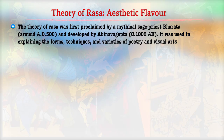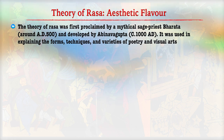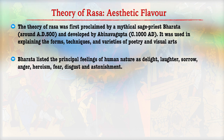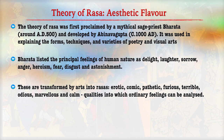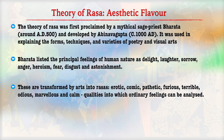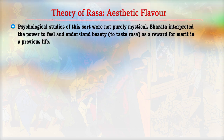The theory of rasa was first proclaimed by the mystic saint-priest Bharata and was later developed by Abhinav Gupta. It was used in explaining the forms, techniques and variety of poetry and visual arts. Bharata listed the principal feelings of human nature as delight, laughter, sorrow, anger, heroism, fear, disgust and astonishment. These were transformed through paintings into various rasas such as comic, furious, terrible, marvellous and calm qualities, which can be analyzed through the various paintings. Bharata interpreted the power to feel and understand the rasas as a reward for painters and artists.